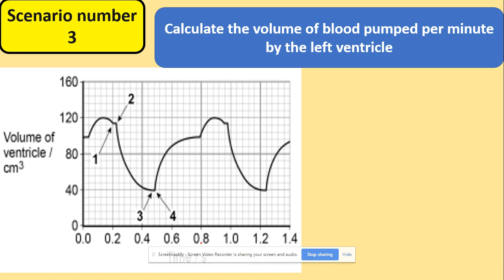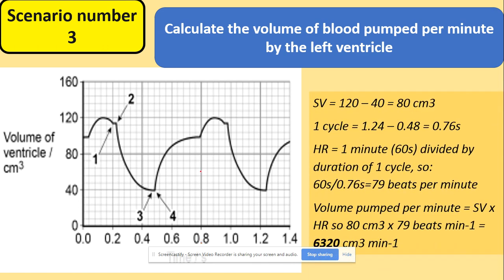We need to calculate the volume of blood pumped per minute. How do we do it? The stroke volume, as we said, is the highest minus the lowest. The stroke volume is 80 centimeters cubed. One cycle lasts, and how do we find this? You can draw the lines again, where the repeat starts and finishes. One cycle, it's 1.24, which you can see here, minus 0.48, which you can see here, which gives you 0.76. That's your heart rate. How to work out the number of beats: we said 60 over the length of one cycle, that's 79. And the volume pumped per minute, we've got the stroke volume times the heart rate and that gives you the answer of 6320.